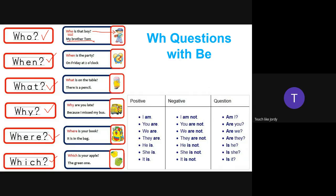For 'when': 'When is the party?' Remember, 'when' asks about time. We use 'is' here because the party is only one — singular. Just like 'who is that boy' — there is only one boy, so we use 'is'. 'When is the party? The party is on Friday at two o'clock.' It's asking about time — you can think of a clock.